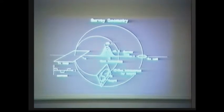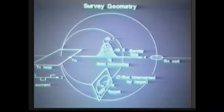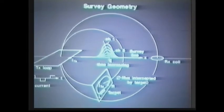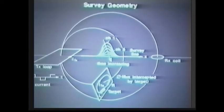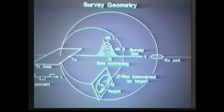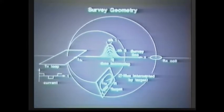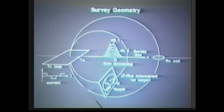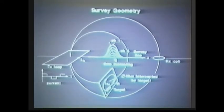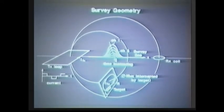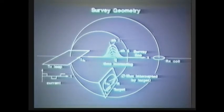I'd love to hear questions or comments during the talk. The survey geometry I will largely deal with is the one I know best, which is the large loop moving receiver configuration. It's not widely used in Australia for probably excellent reasons, but the principles are the same regardless of which system we're talking about.